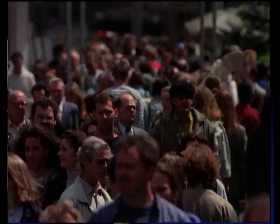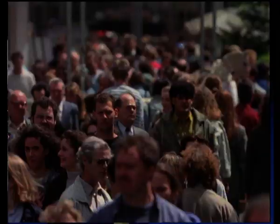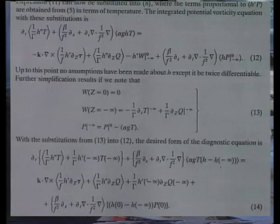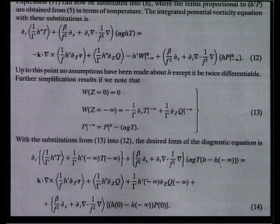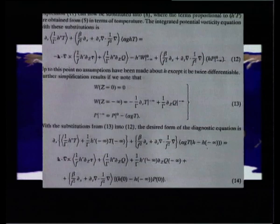We cannot experiment with the Earth. To assess the impact of human activities on climate, our only option is to use computer models which simulate the climate system. To develop a computer model of a climate subsystem — the atmosphere for example — we start with a set of complex numerical formulae describing the laws of nature governing the state and evolution of the subsystem.